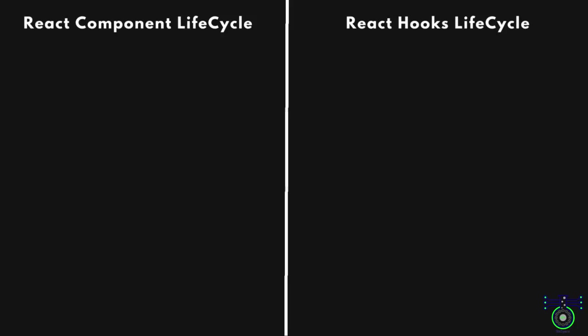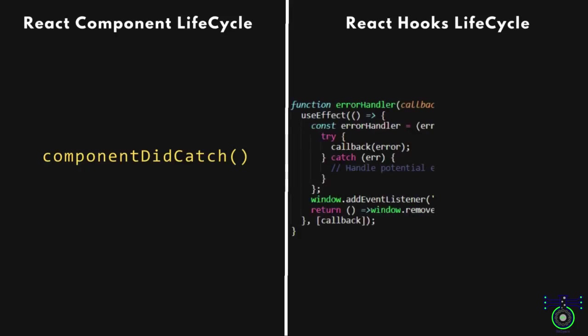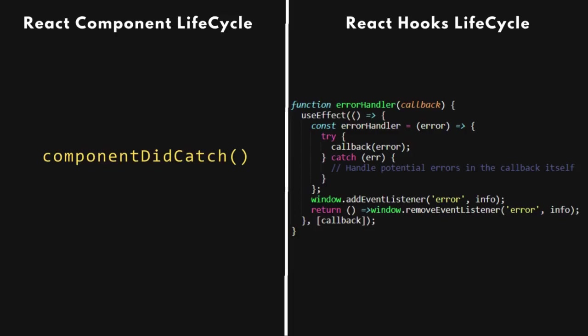Lastly, the componentDidCatch equivalent using useEffect. The implementation adds an error event listener to the window object. A try-catch block prevents callback errors from affecting the application globally. The event listener is also included in the cleanup function to remove it when the component is unmounted, preventing memory leaks. This approach provides global error handling for the entire application.